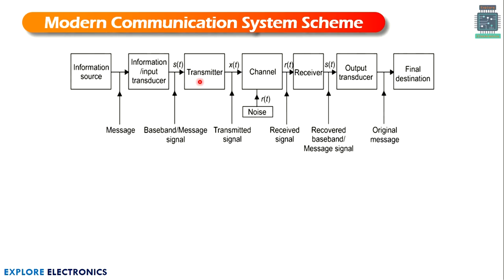The baseband signal is given to the transmitter. The transmitter does some modification and then transmits the signal through a communication medium, and the output of the transmitter is called the transmitted signal. This transmitted signal flows through a wire, through air, or through any communication medium — that is called the channel. The channel is the medium between the input side and the output side, from the source end to the destination end. While transmitting data through the channel, there may be an occurrence of noise due to various effects.